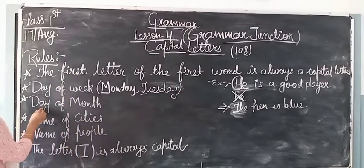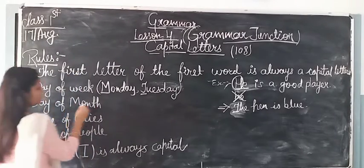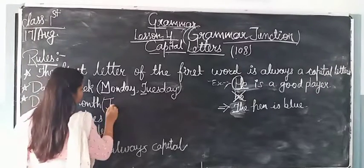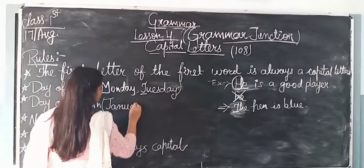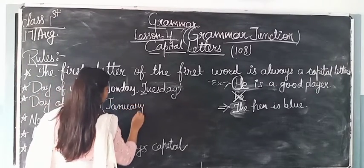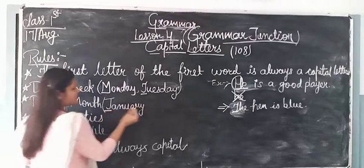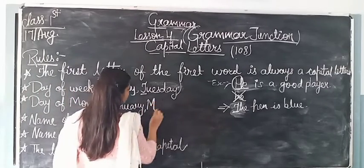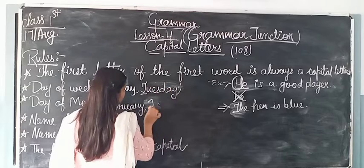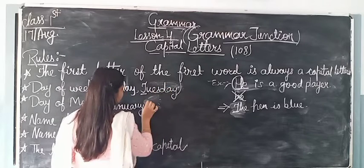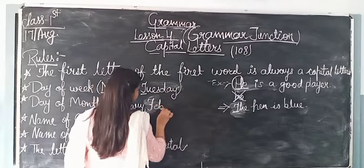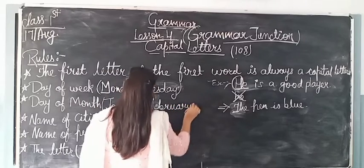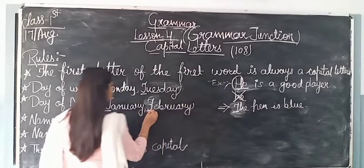The next rule is about months of the year. For example, J-A-N-U-A-R-Y — January, J is always capital. F-E-B-R-U-A-R-Y — February, F is always capital. Because this is the first letter of the month name.